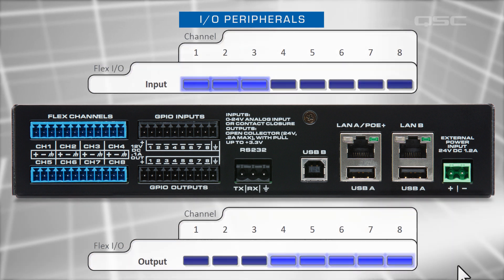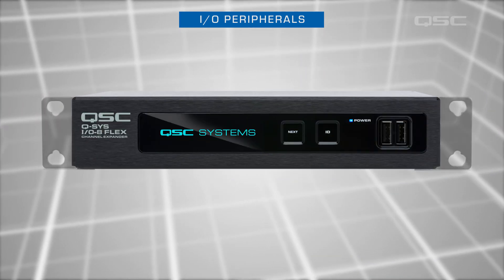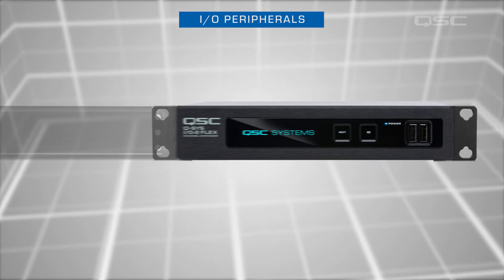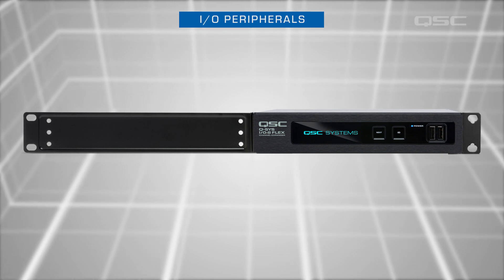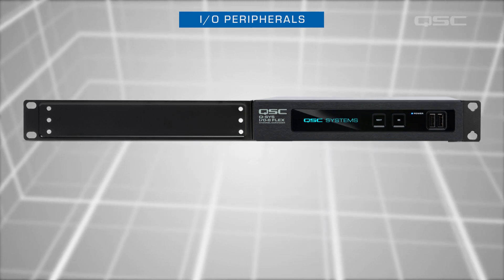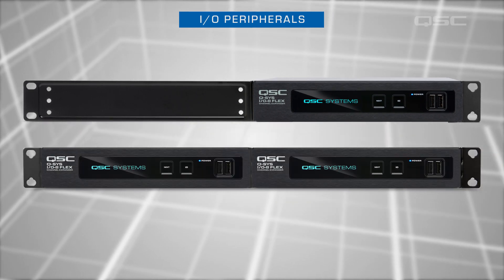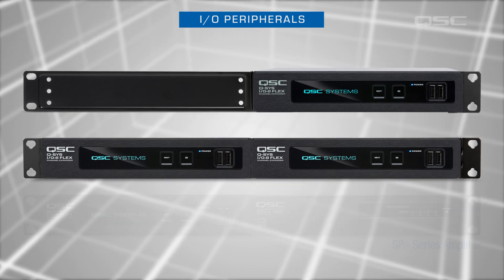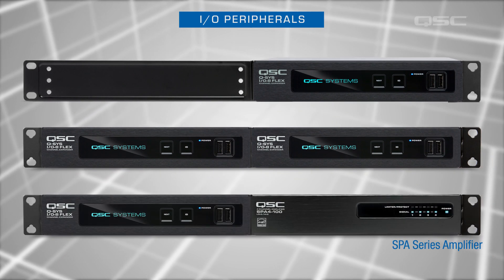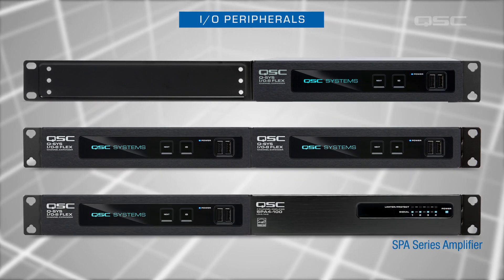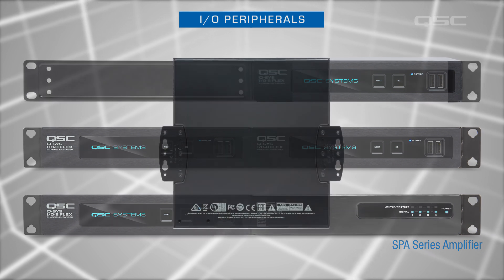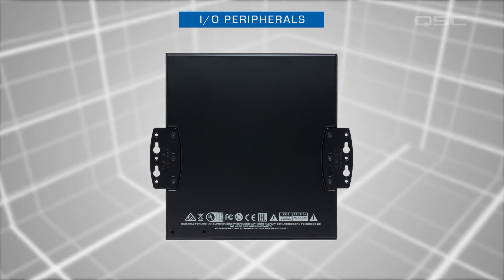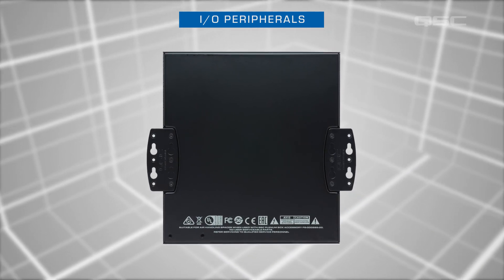On top of that, it comes with great mounting hardware that allows for single unit racking, pairing them up with an additional I.O. 8 Flex, or if you're doing a standard conference room, you might want to mount one right next to one of our S.P.A. series amplifiers, or mount them outside the rack entirely, under the table or behind an LCD screen.